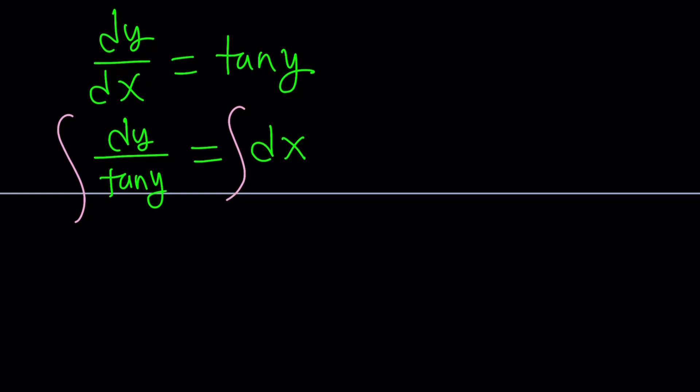But how do you integrate 1 over tangent y, right? You see, that's what I meant by reverse. If you had tangent x, you would integrate tangent x. Now we're going to have to integrate its reciprocal. Make sense? Cool.